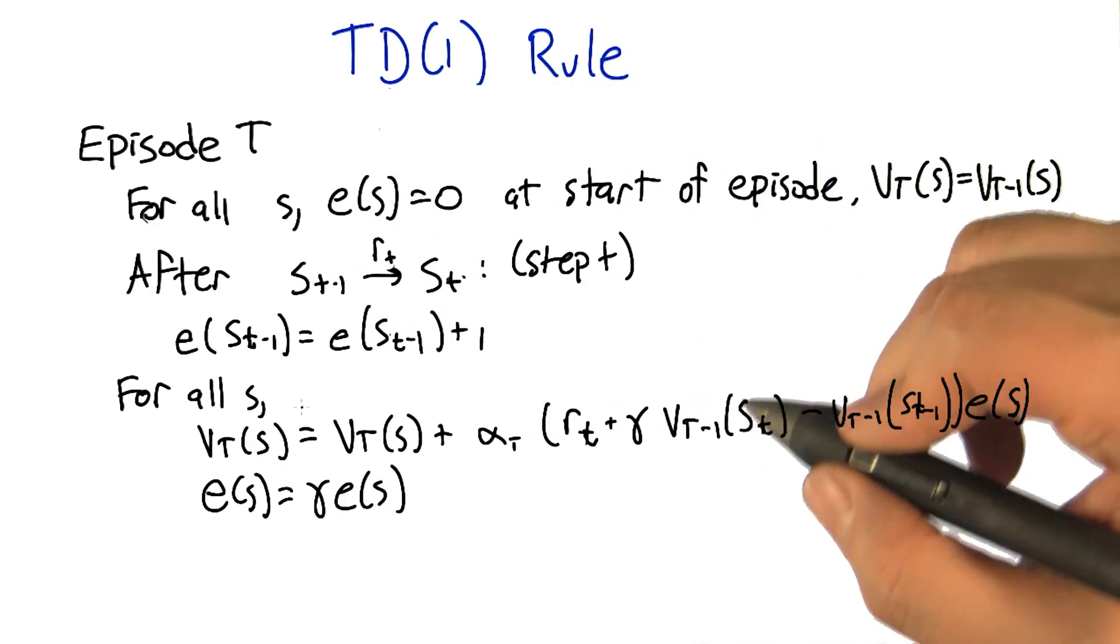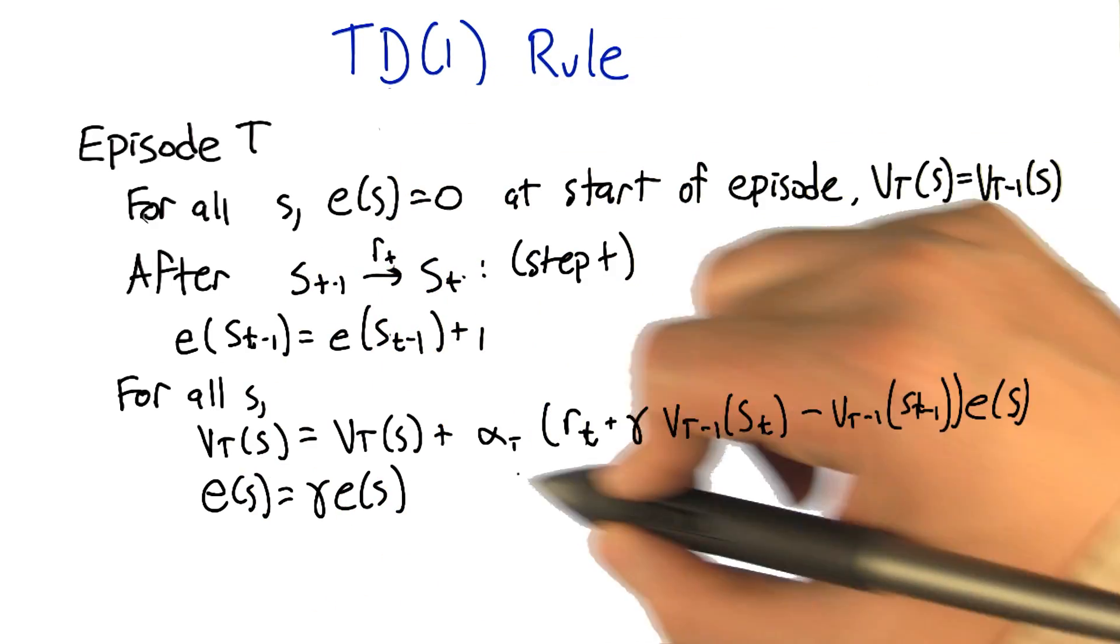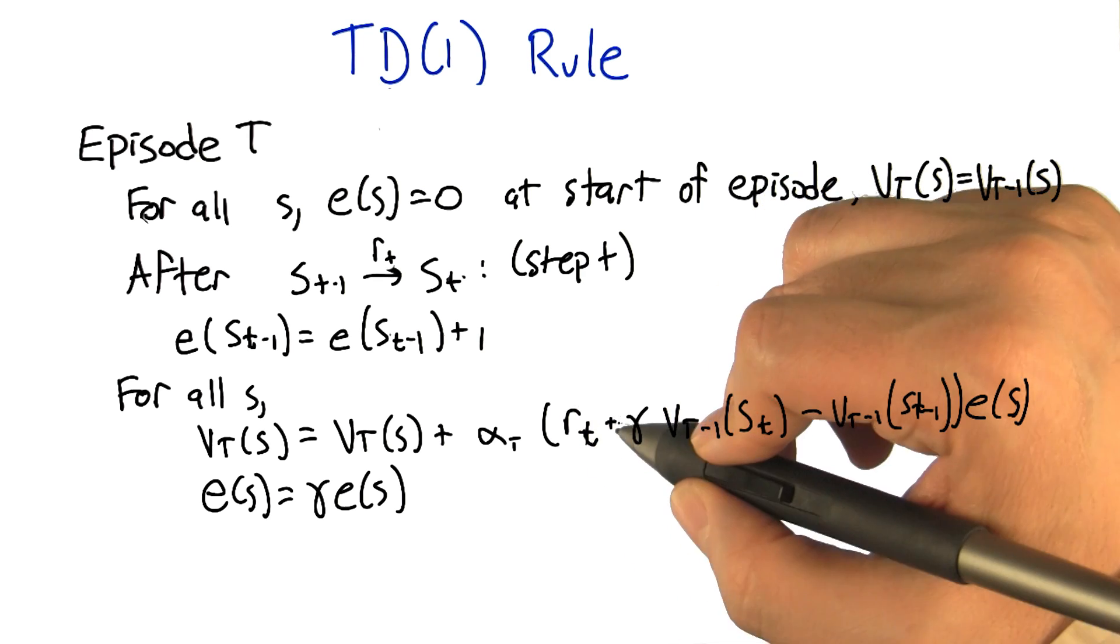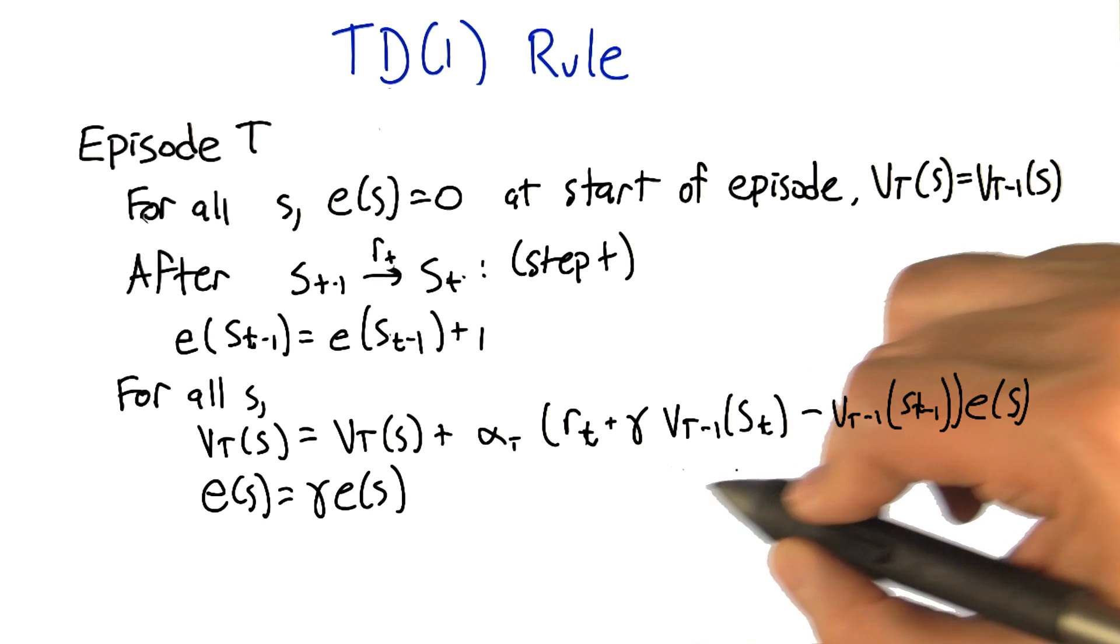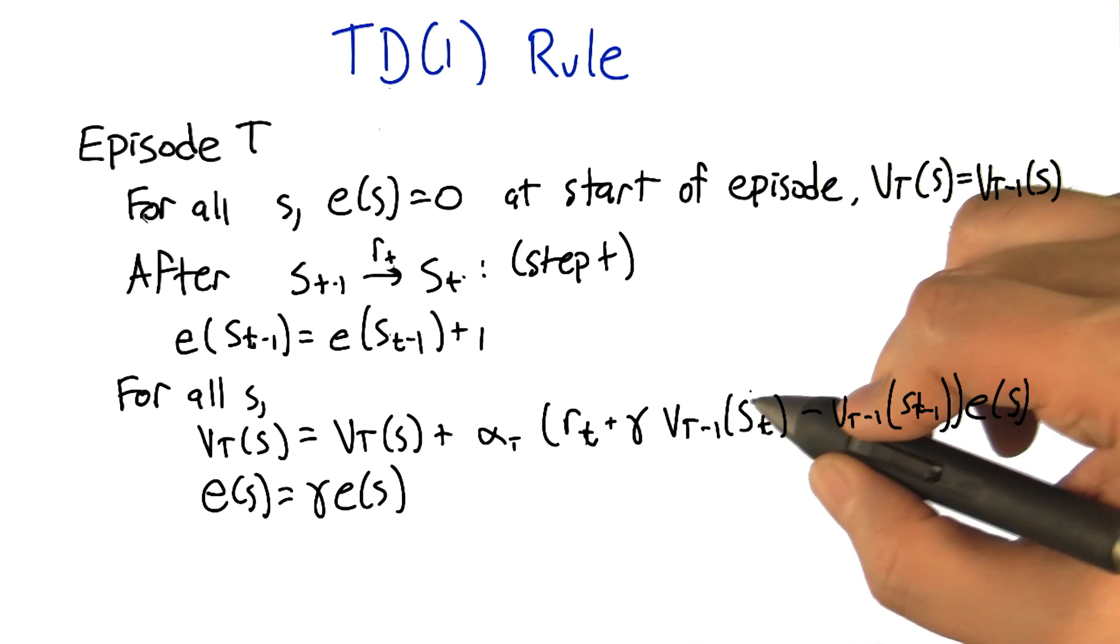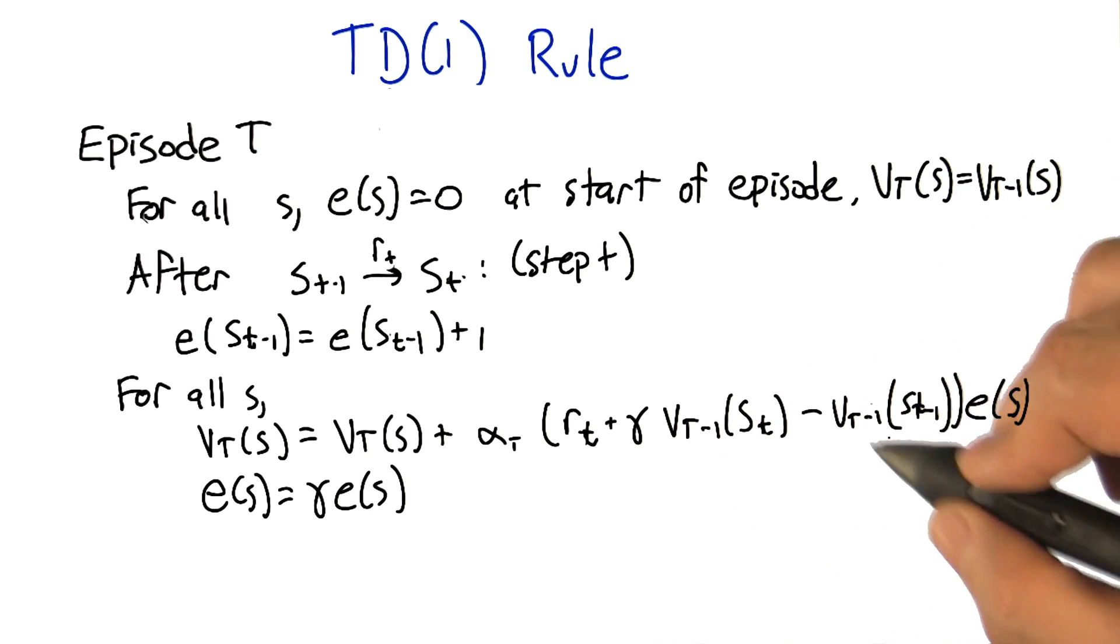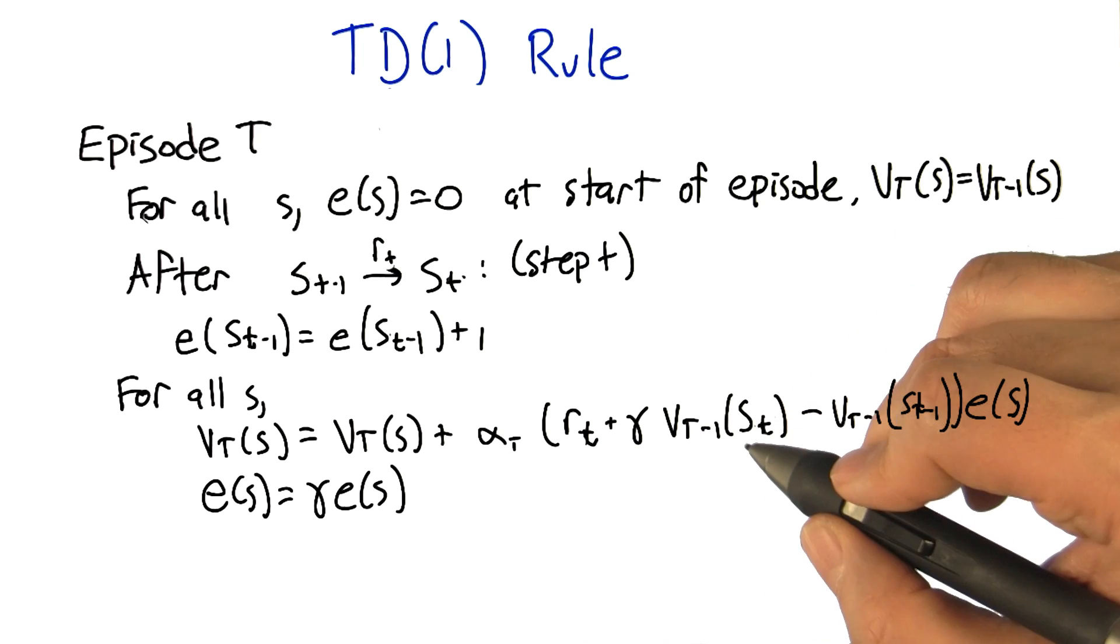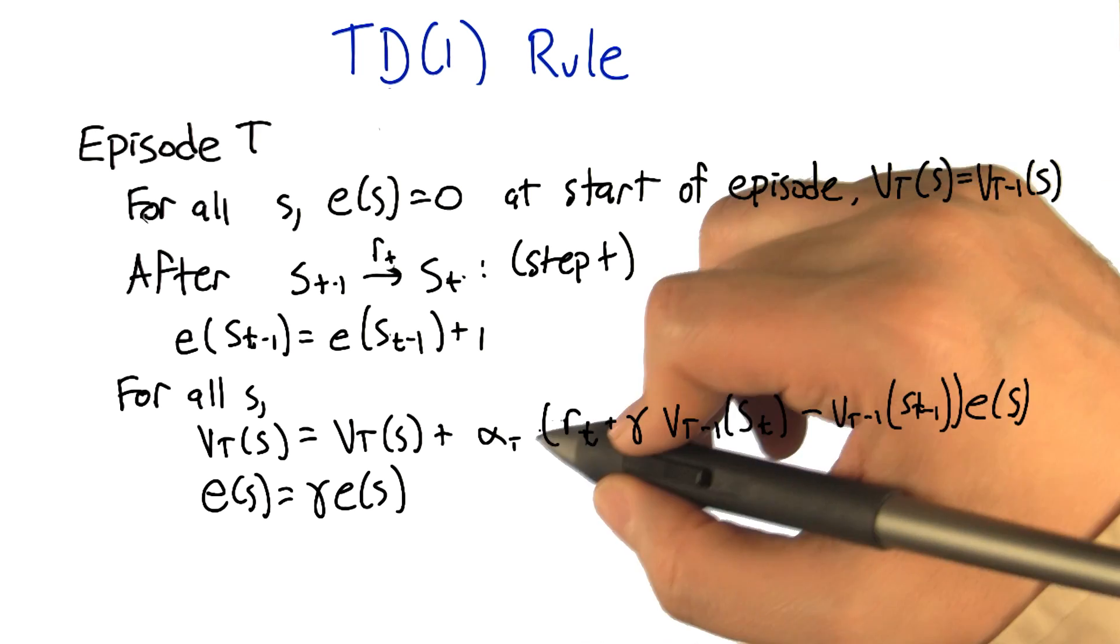Then, go through all the states, compute this one quantity, which is the same for all states. This is the temporal difference. This is the sum of the reward plus the discounted value of the state that we just got to, minus the state that we just left. And we're going to use the values that we had from the previous iteration, previous episode. That's going to be our temporal difference.